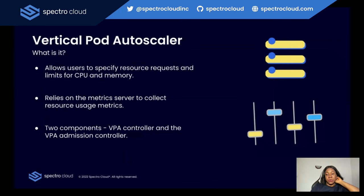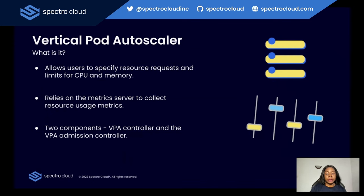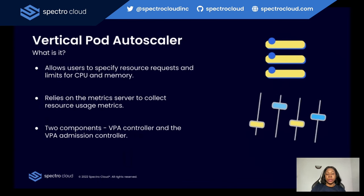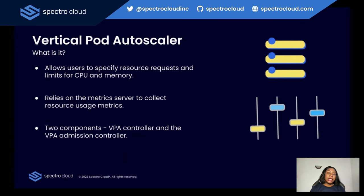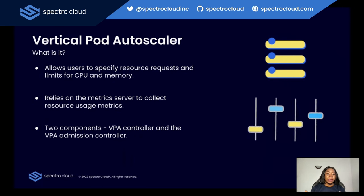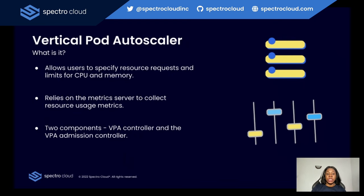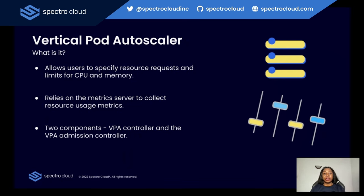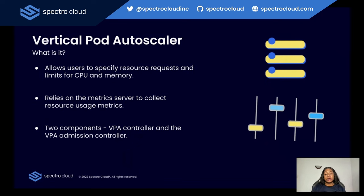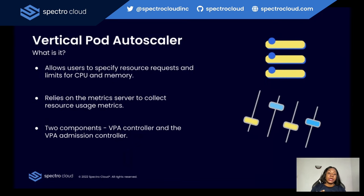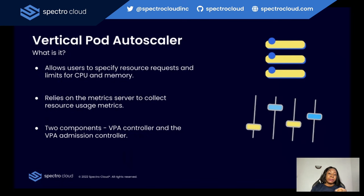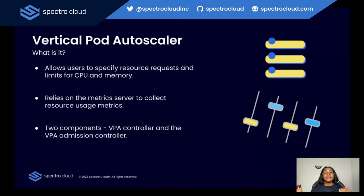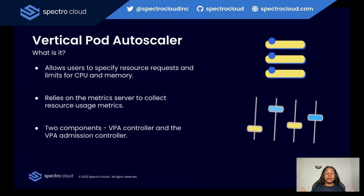The next scaling mechanism is the Vertical Pod Autoscaler. VPA is a feature in Kubernetes designed to dynamically adjust the resource requests of individual pods based on observed usage. Unlike HPA, which adjusts the number of pod replicas, VPA focuses on optimizing the resource allocation of existing pods. There are two major components of the VPA: the VPA controller, which implements the autoscaling logic, and the VPA admission controller, which validates and mutates pod admission requests.